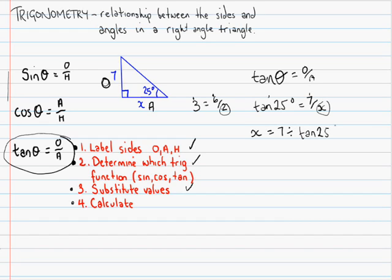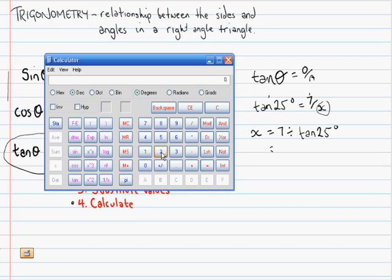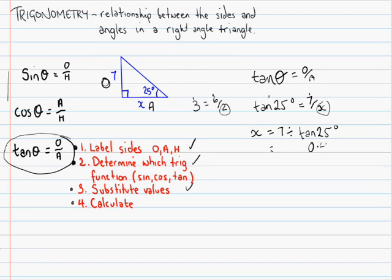Tan 25 degrees. And now I can work this out. First off, I'll work out what tan 25 degrees is. So, to do this, I get 25, and I press tan on the calculator. And I get the answer, 0.47.